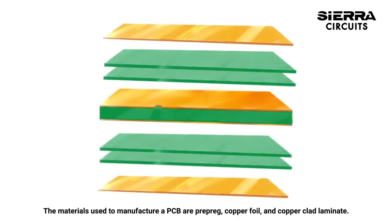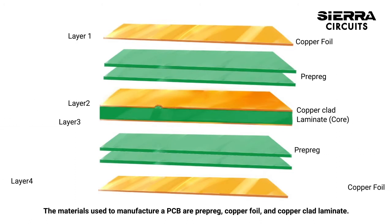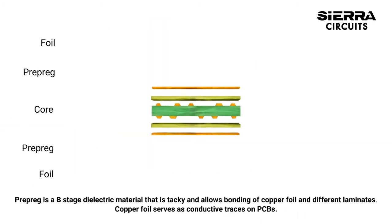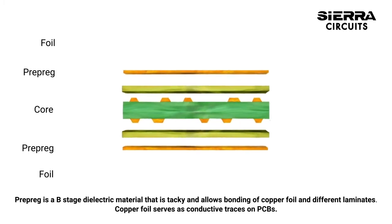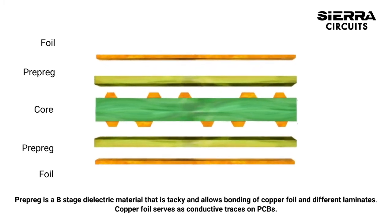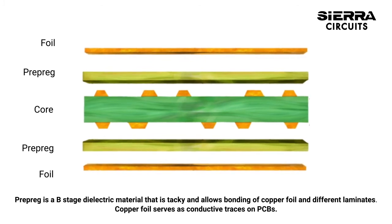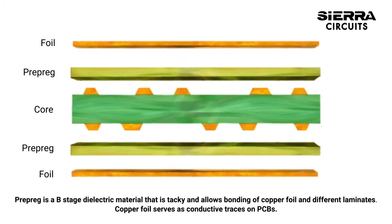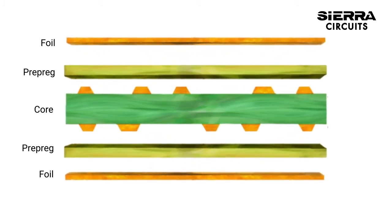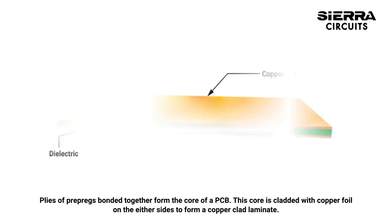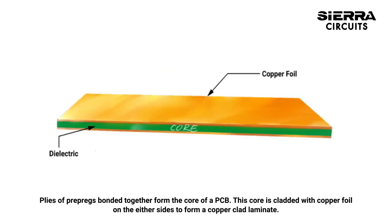The materials used to manufacture PCBs are prepreg, copper foil, and copper clad laminate. Prepreg is a B-stage dielectric material that is tacky and allows bonding of copper foil and different laminates. Copper foil serves as conductive traces on PCBs. Plies of prepregs bonded together form the core of a PCB, which is then cladded with copper foil on either side to form a copper clad laminate.